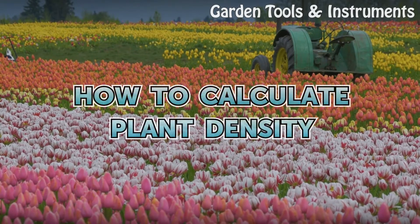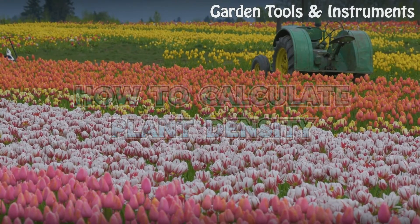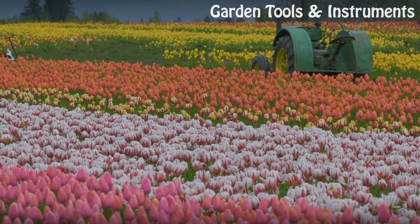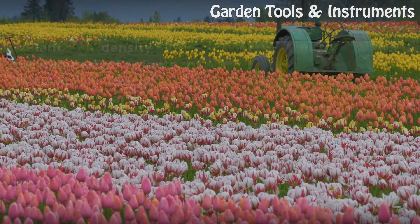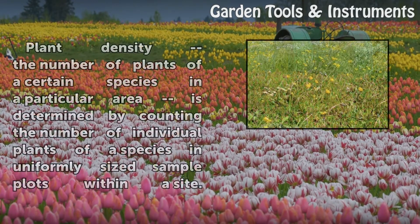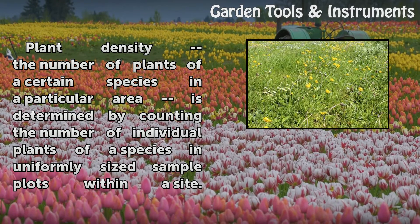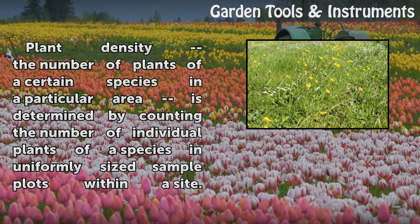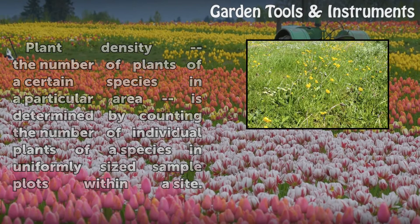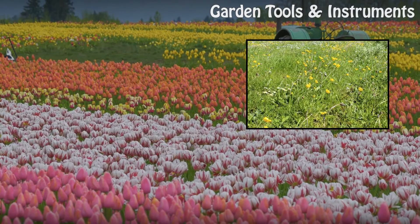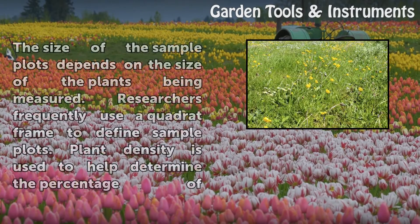How to Calculate Plant Density. Plant density, the number of plants of a certain species in a particular area, is determined by counting the number of individual plants of a species in uniformly sized sample plots within a site.